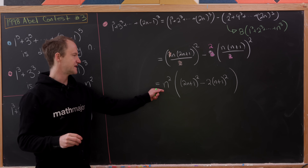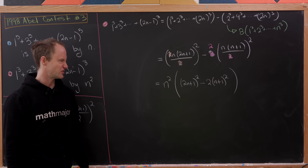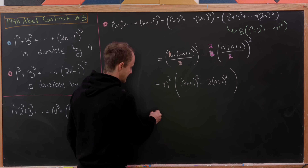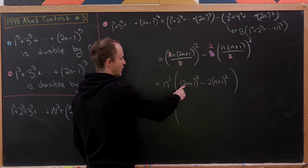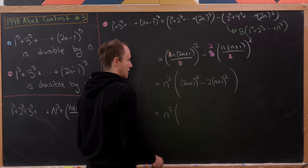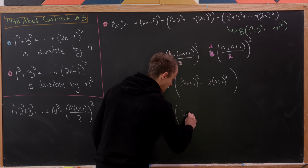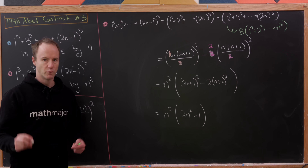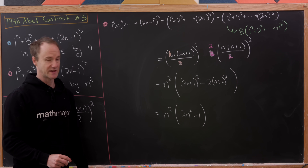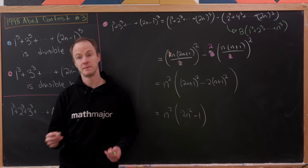At this point it's clear we have a multiple of n squared. Expanding for completeness: 4n squared plus 4n plus 1 minus 2n squared plus 4n plus 2, which gives n squared times 2n squared minus 1. But all we really needed was that this expression is divisible by n squared, and that's a good place to stop.